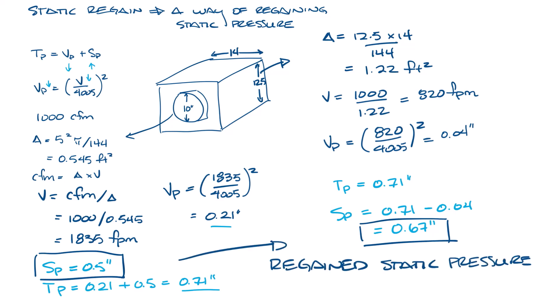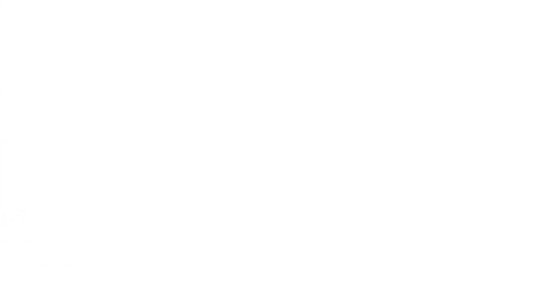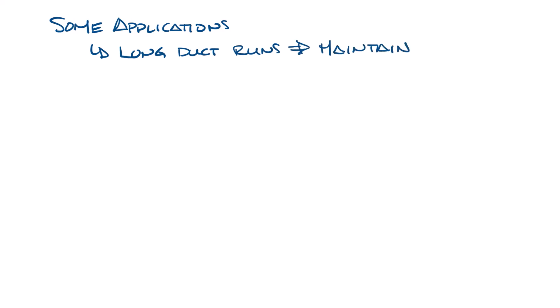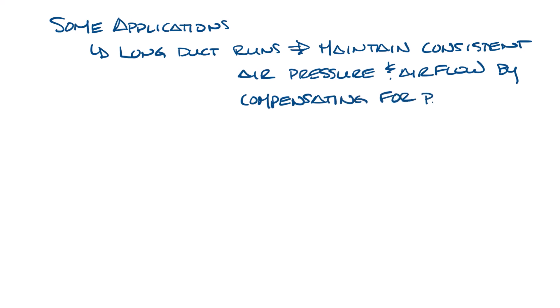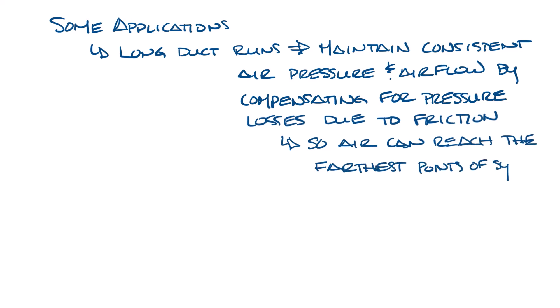Static regain is primarily used in duct design to ensure that air is delivered evenly and efficiently throughout the system. Some applications where you might want to use static regain would be when you have long runs of ductwork. Static regain helps maintain consistent air pressure and airflow by compensating for the pressure losses due to friction. This is important to ensure that the air reaching the furthest points of your system has the pressure you need when it gets there.